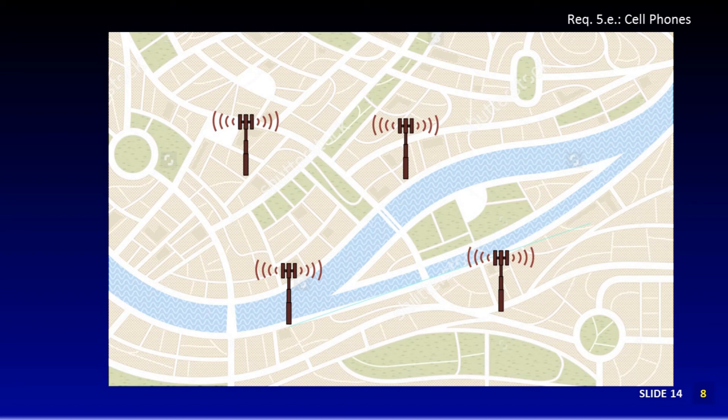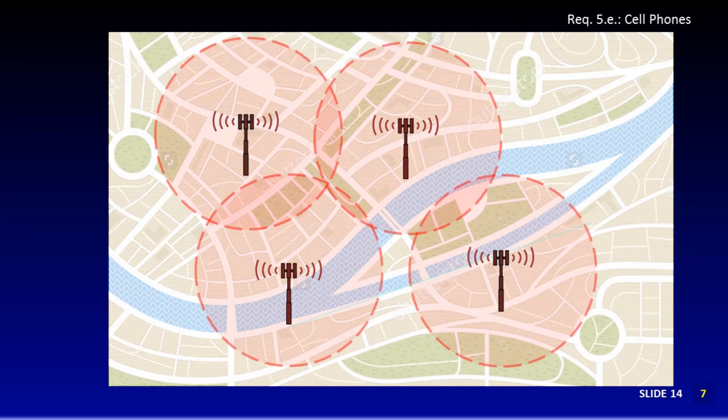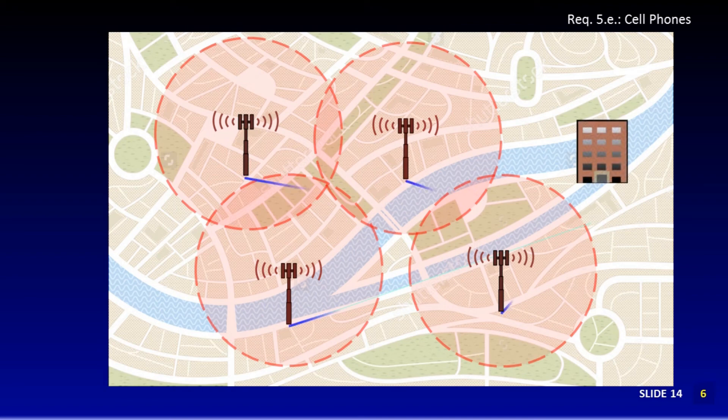Now we're showing the cells that are covered by the base station antennas. A cell is as big as the range of a base station antenna. Here, we're showing they reach out in the same distance, but in reality, distances can vary quite a bit. If we want a bigger cell, we can increase the power of the base station transmitter. For this discussion, we're showing it have the same range.